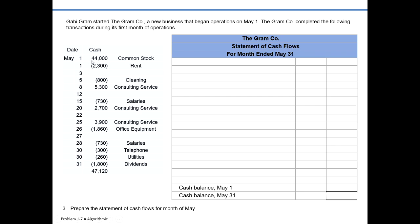For example, on May 1st, when they received $44,000 of cash, that was in exchange for common stock for Gabby Graham. Later on May 1st, when they paid out $2,300 in cash, that was related to paying rent. The beginning balance on May 1st would be zero — this is before any transaction occurred, the company just started. When we accumulate all the impact of transactions in May, the resulting cash balance at May 31st should be $47,120.